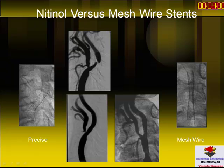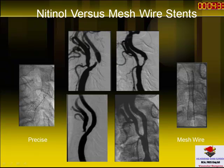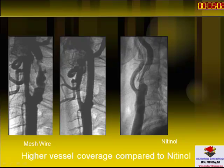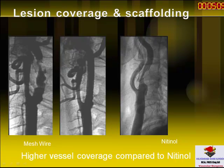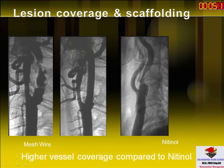Imagine one patient where for one case you have put a nitinol stent and for the other a mesh wire stent. In the nitinol stent case, it will have a smooth curve, giving a curved stent appearance. In the mesh wire case, you will have a straightening of the vessel, the kink will shift more distally, and on a plain x-ray you can see the stent in an upright position without any curve.